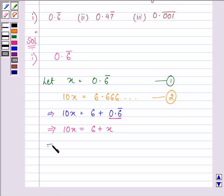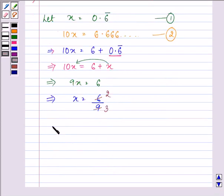So further we can have 9x is equal to 6 as x will get subtracted from 10x, and x is equal to 6 by 9 which on simplifying gives us the answer of x as 2 by 3. So x is equal to 2 by 3 which we took as 0.6 bar.